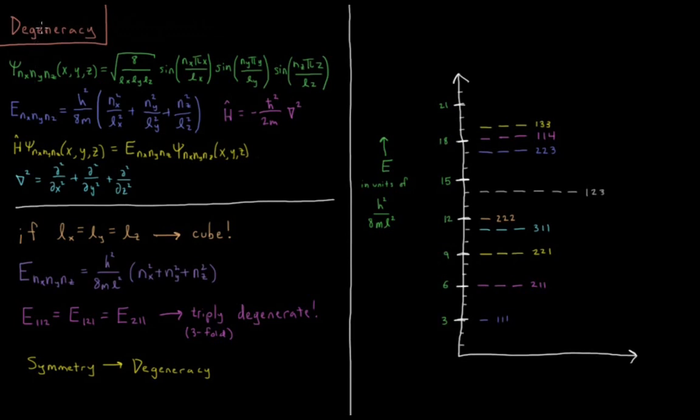Degeneracy is the word for how many energy levels have the same energy as each other for a given model system. And as we saw, we got this by making this a cube. So degeneracy is typically the result of symmetry in a system.